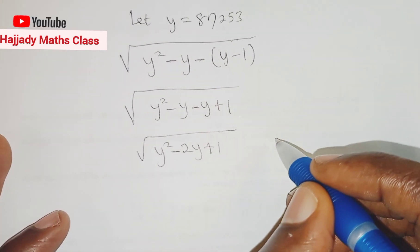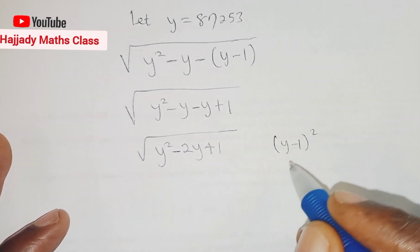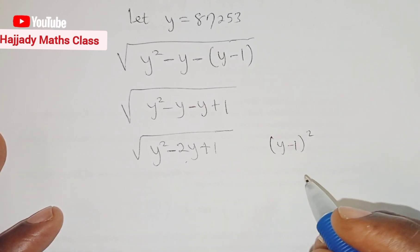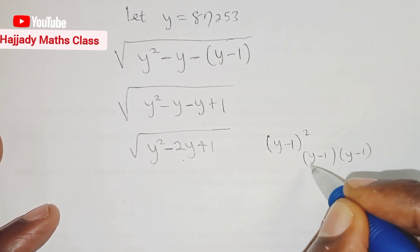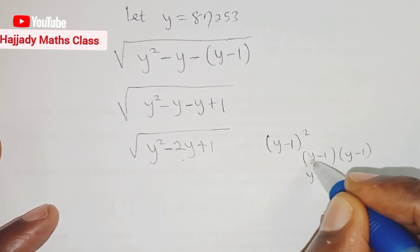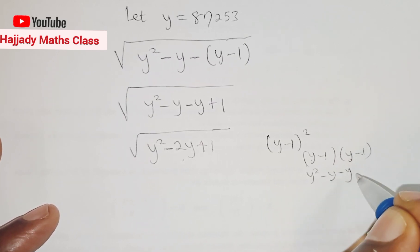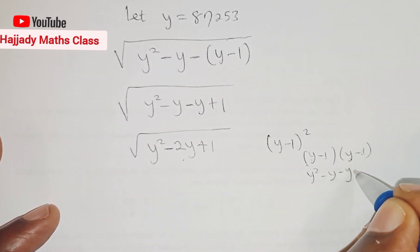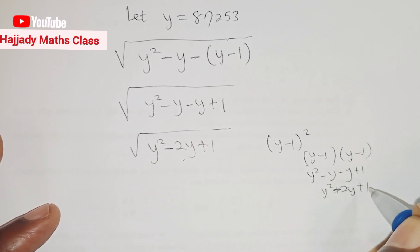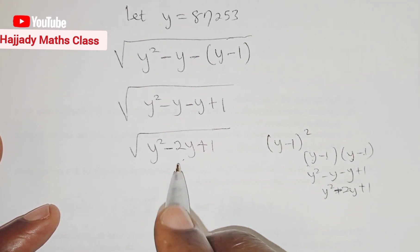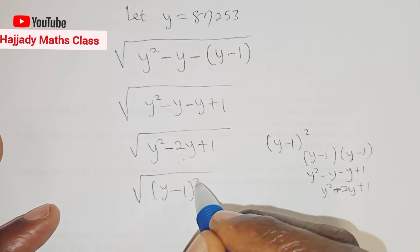Now don't forget that if you simplify y minus 1 all squared, it's the same as this. We can just quickly confirm that. So this is like saying y minus 1, y minus 1. So y times y, y squared, y times minus 1, minus y. We have y squared minus 2y plus 1. So we have the same thing here. So with this, we can say that this is the same thing as having y minus 1 all squared.